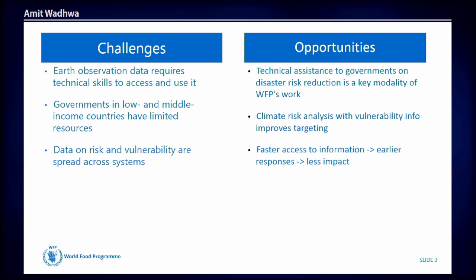Risk and vulnerability data are spread across systems, meaning there's no single source of information for what you need. For WFP, this presents opportunities: technical assistance to governments is a key modality of how WFP works. WFP as an organization aims to connect with different governments to improve logistics and performance. Climate risk analysis and vulnerability information improves targeting — with better tools you can reach the specific people in the specific place. And faster access to information translates to less impact.